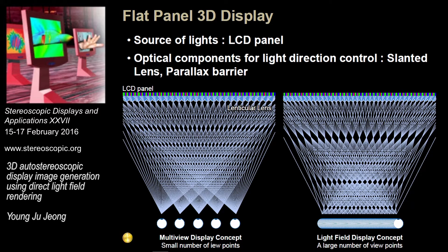The figure shows the concept of a multi-view display. Since it has a convergence point, it provides motion parallax, which is not continuous. In contrast, the light field display provides a large number of viewpoints, so according to our movement, we can enjoy continuous motion parallax.